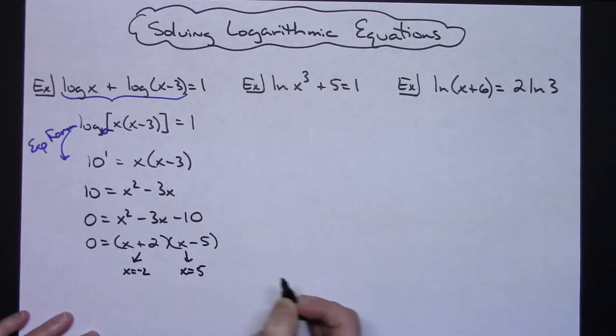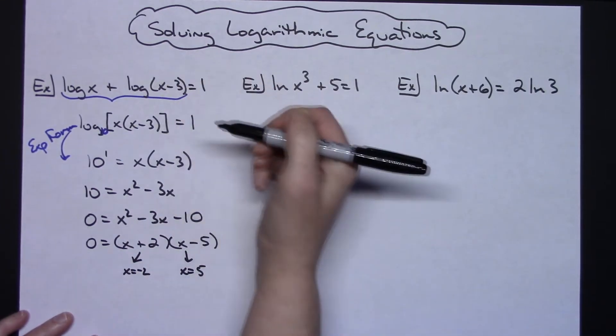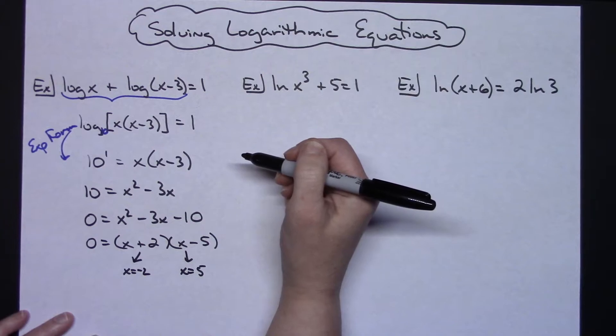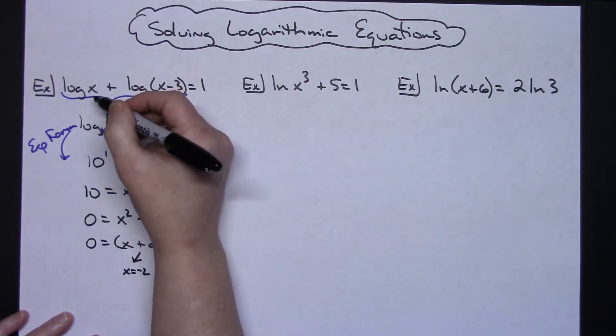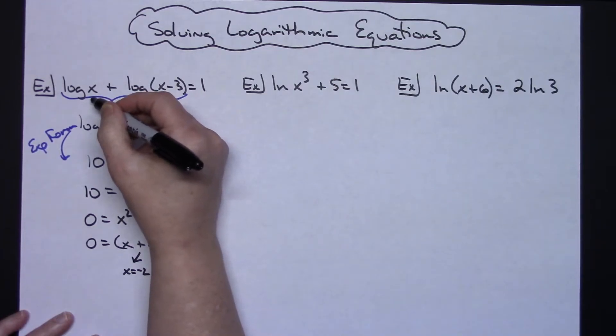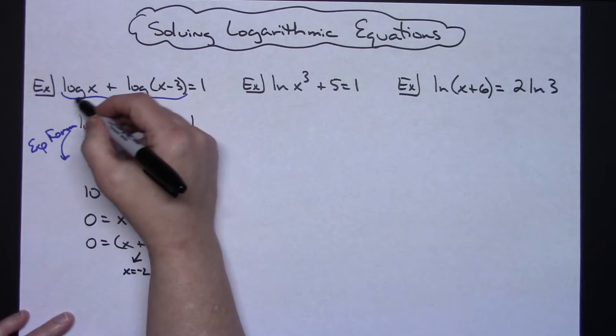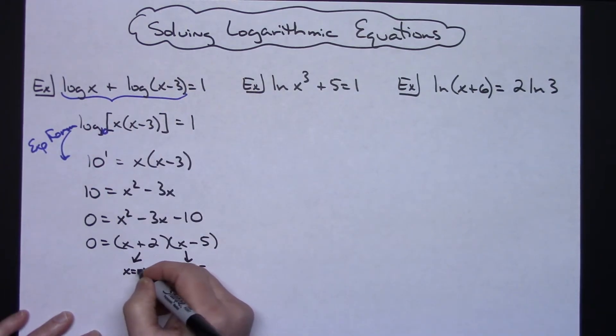That's going to give us X equals negative 2 and X equals 5. Now on logarithmic equations you need to take both those answers, plug them back into that original equation, and see if they check. When I take the X equals negative 2 and I plug it back in, the very first place I plug it back in right here I would be taking the log of a negative number and we know that's not allowed.